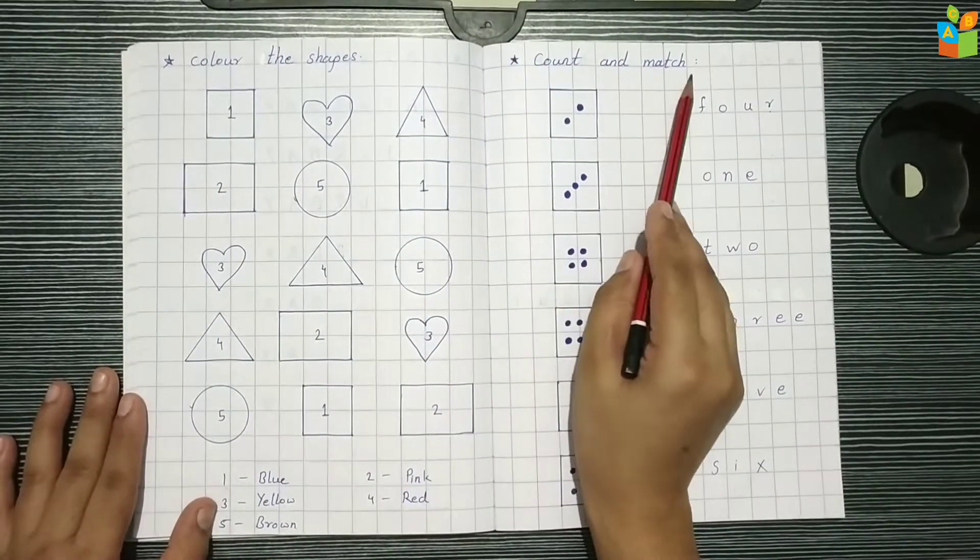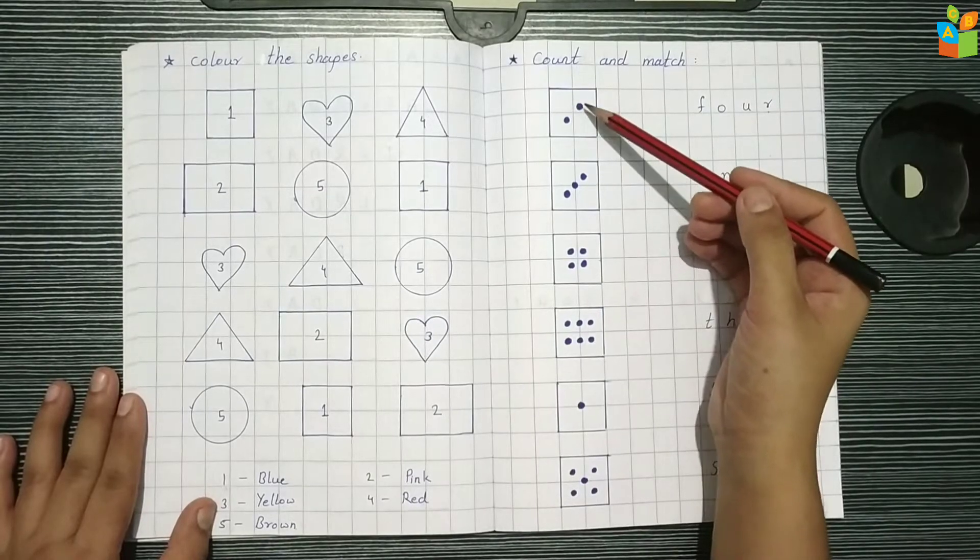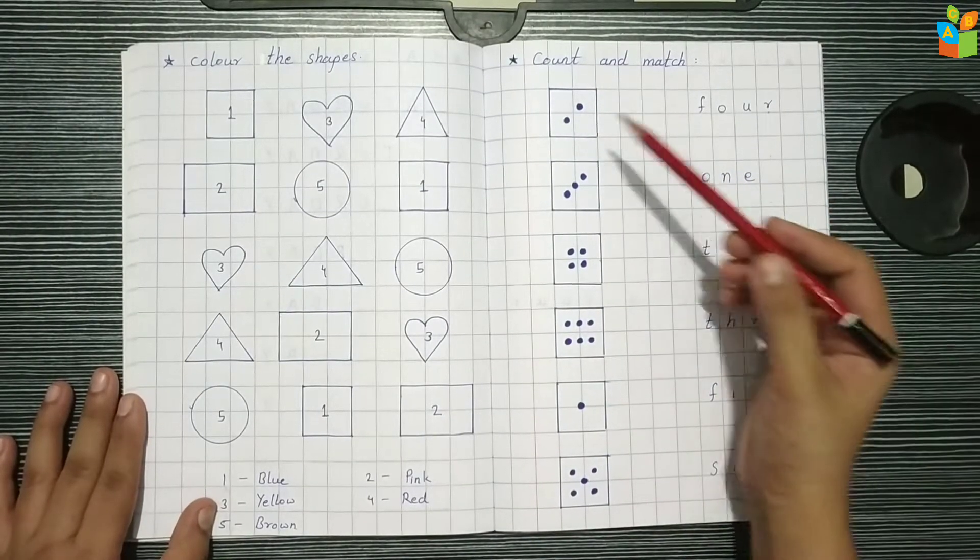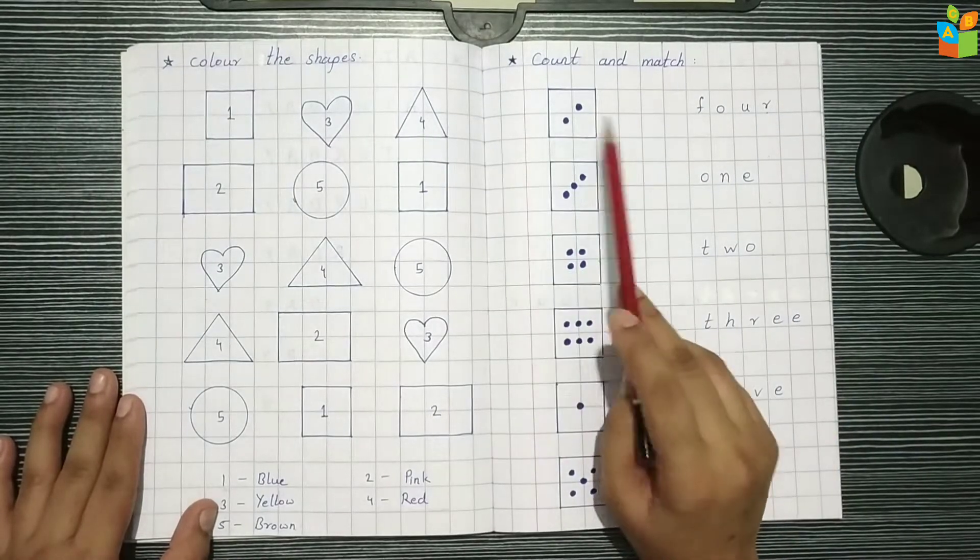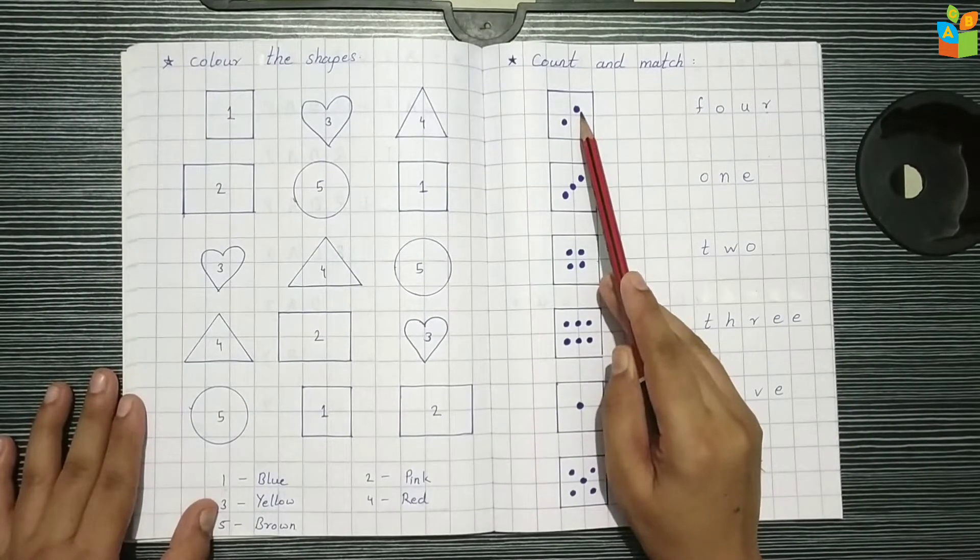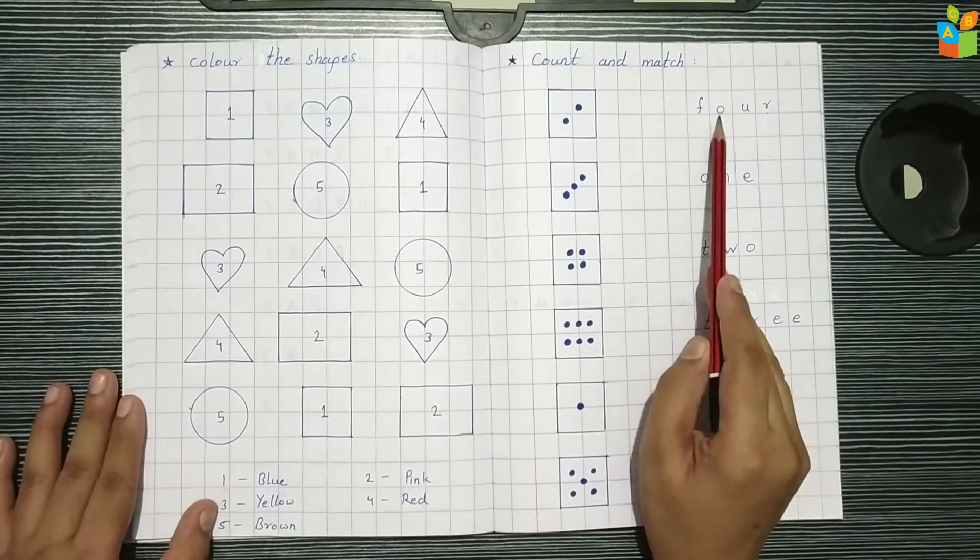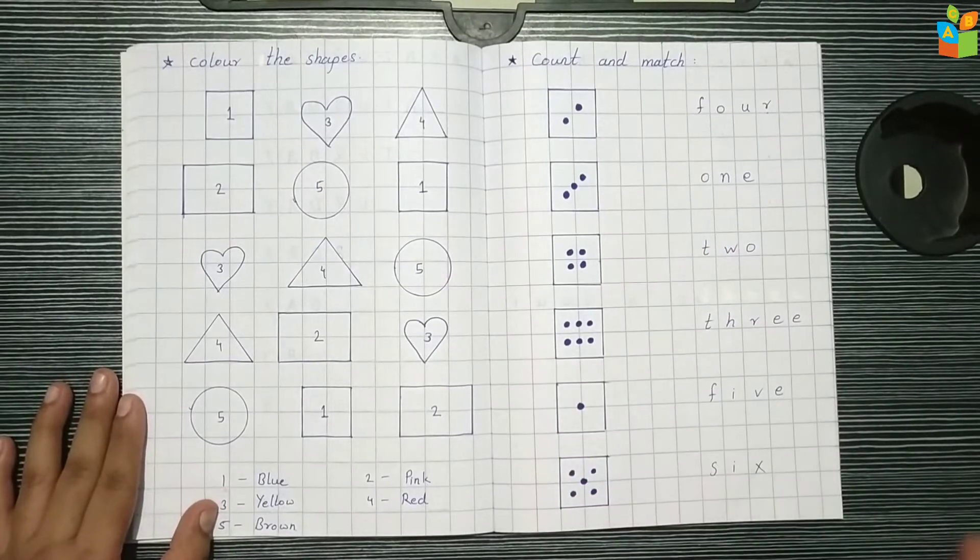Next is count and match. I have made dice and here are number names. What do you have to do? Count the dots on the dice and match them with the number names.